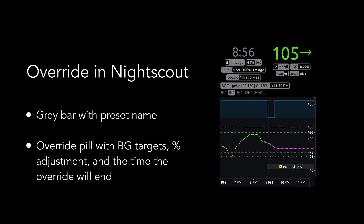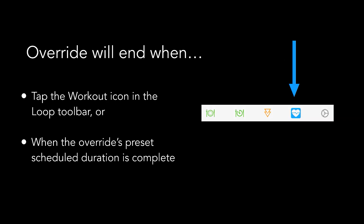There's also an override pill that shows you your blood glucose targets, the overall insulin needs percentage adjustment, and the time the override is scheduled to end. If the override is set for an indefinite duration, there will be an infinity symbol in the override pill. You can end an override by tapping on the workout icon in LOOP's toolbar, or the override will automatically end itself when its scheduled duration is complete.